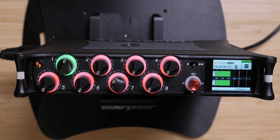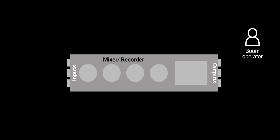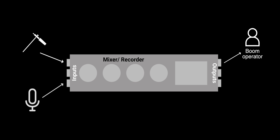Why would you want to send different things to different outputs? For your boom operator, you might want to send a feed of the boom microphone and a microphone you have at your mixer so that you can talk to your boom operator. This way, the boom operator can hear the boom mic and hear when you ask them to do something.